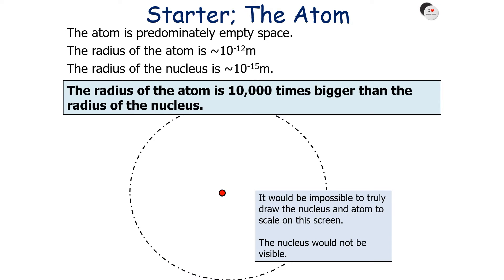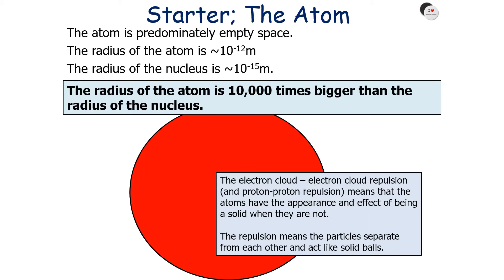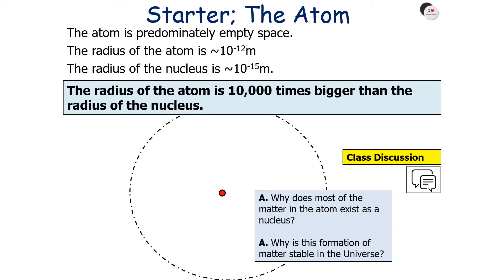What do we know so far from GCSE physics? The atom is predominantly empty space. The radius of the atom is about 10 to the minus 12 metres and the radius of the nucleus is about 10 to the minus 15 metres, so the atom is about 10,000 times bigger than the nucleus. Electron cloud repulsion and proton-proton repulsion means that atoms have the appearance and effect of being solid when they're not. But why does most of the matter in an atom exist as a nucleus, and why is this formation stable?